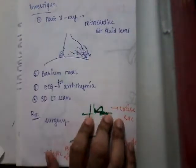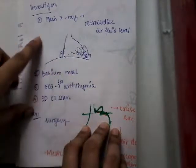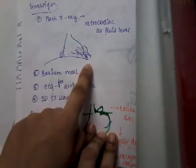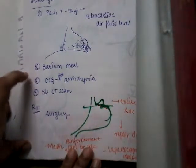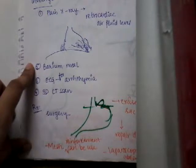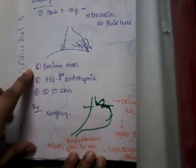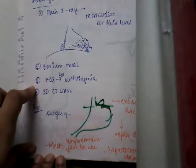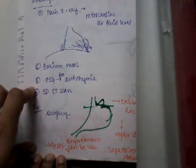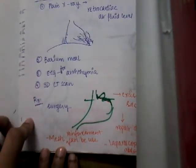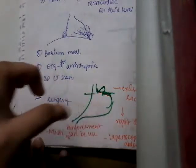For investigations, a plain X-ray shows retrocardiac air-fluid levels. Barium meal is the gold standard for hiatus hernia, clearly demonstrating the herniated part of the stomach in the thorax. An ECG can be done to assess arrhythmias, which are more common in rolling type hiatus hernia. A 3D CT scan can also be performed.